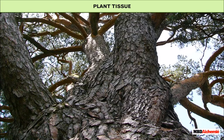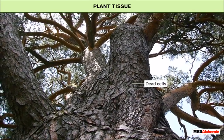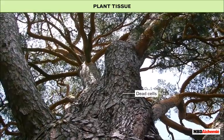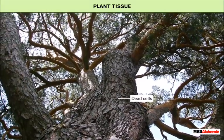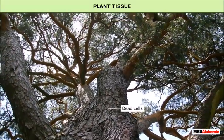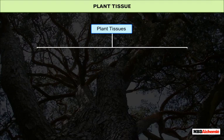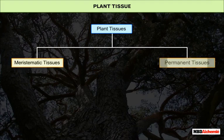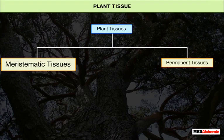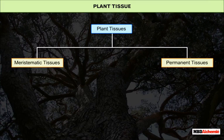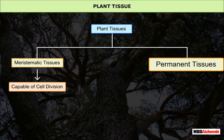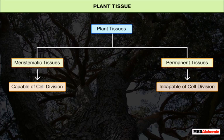Most plant cells are dead. These dead cells provide mechanical strength to the plant. Plant tissues are of two types: meristematic and permanent. The cells of meristematic tissue are capable of cell division, while permanent tissue consists of mature cells which are incapable of cell division.